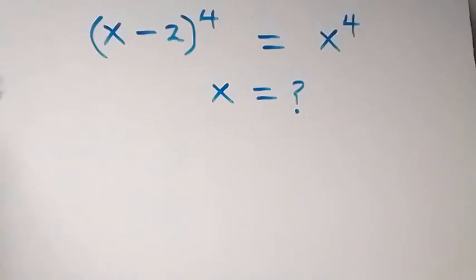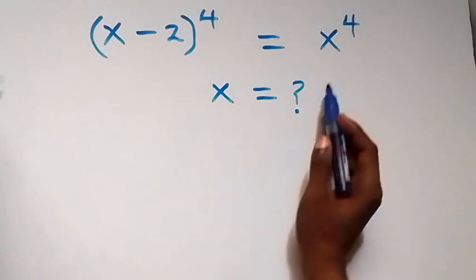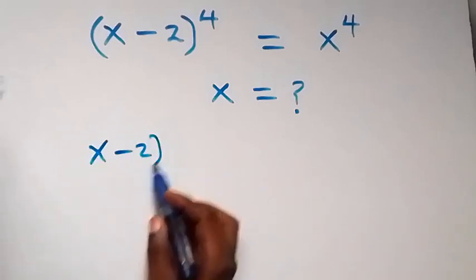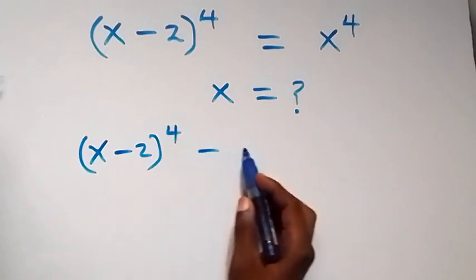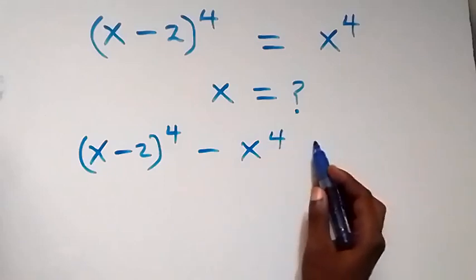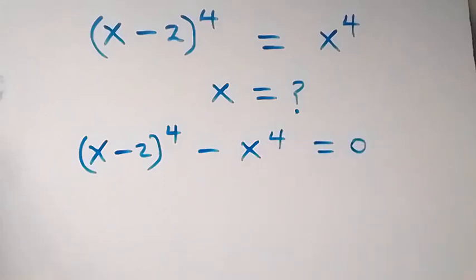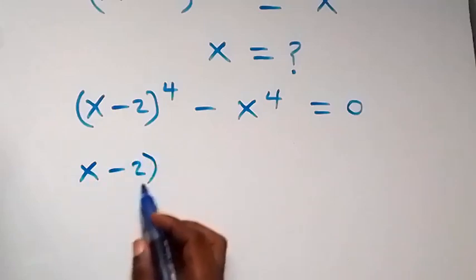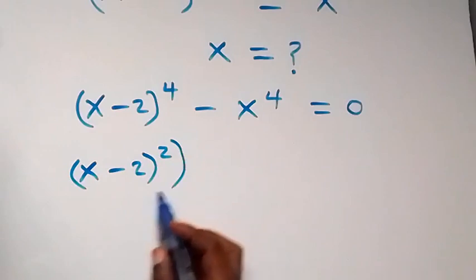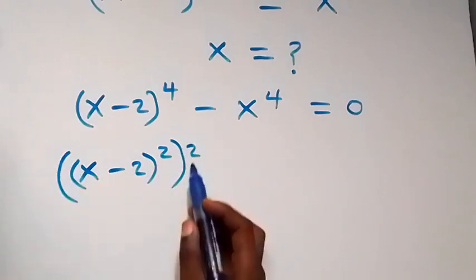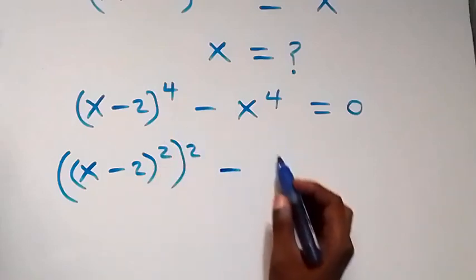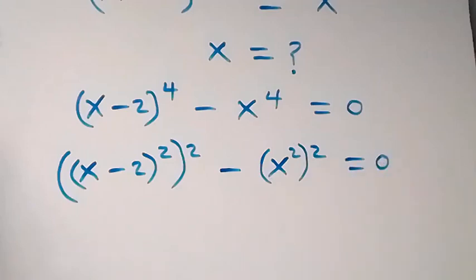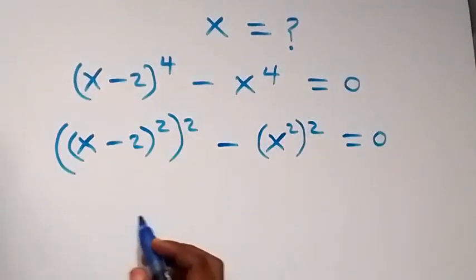Hello, you are welcome. How to solve this nice exponential problem. We take what's on this side to this side, then here we have (x minus 2) raised to power 4 minus x raised to power 4 equals to zero. We can rewrite this: (x minus 2) squared, then squared again, as 2 times 2 gives 4, minus x squared, then squared again, equals to zero.